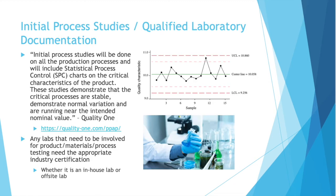Initial process studies will be done on all the production processes and will include statistical process control charts on the critical characteristics of the product. These studies demonstrate that the critical processes are stable, demonstrate normal variation, and are running near the intended nominal value. Any labs that need to be involved for products, materials, or process testing need the appropriate industry certification — whether it's an in-house lab or an outside lab.